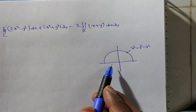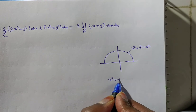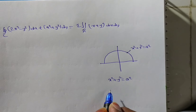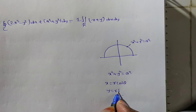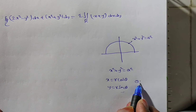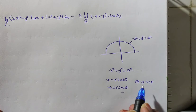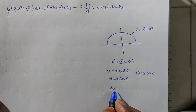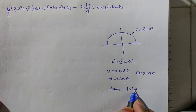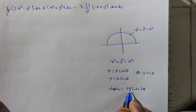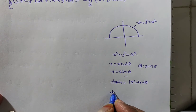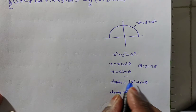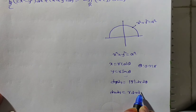I will solve using a change of variables — converting to polar coordinates. For x² + y² = a², we substitute x = r cosθ and y = r sinθ. For a full circle, θ goes from 0 to 2π. The Jacobian of the transformation from Cartesian to polar coordinates, which we have studied, gives dx dy = r dr dθ.